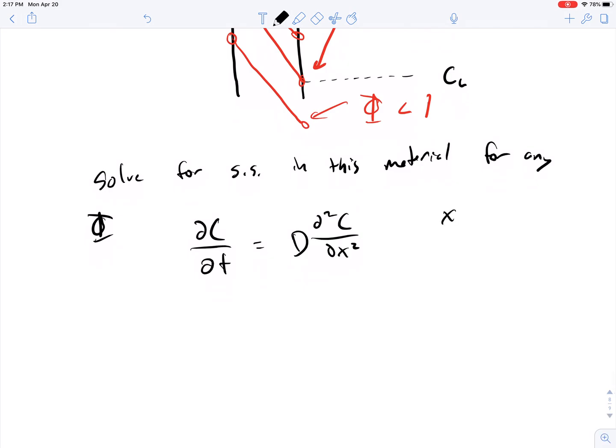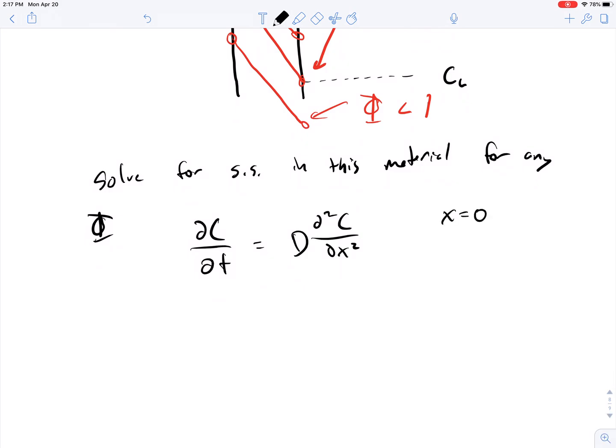And then we're going to have, at x equals 0, the boundary condition at this point right here, the C in the membrane, I'm just going to call it C, shorthand C, is going to be equal to some partition coefficient times the concentration on the outside. And then at x equals L, so this goes from 0 to length L, we're going to have C equals phi, the partition coefficient for that material, times C_L.